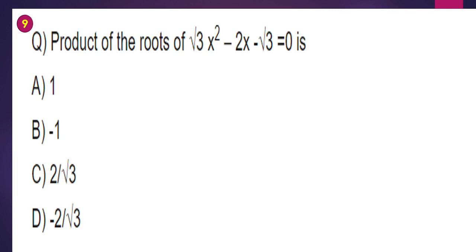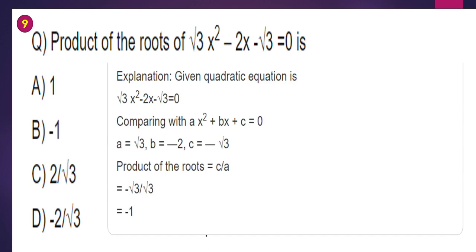Next problem: find the product of the roots of root 3 times x squared minus 2x minus root 3 equals 0. Comparing with ax squared plus bx plus c equals 0: a equals root 3, b equals minus 2, c equals minus root 3. Product of roots formula is c by a, which equals minus root 3 by root 3 equals minus 1. Option B is the right answer.